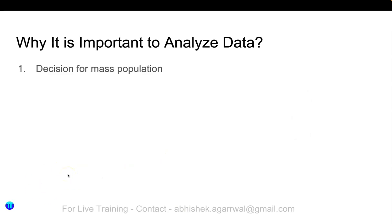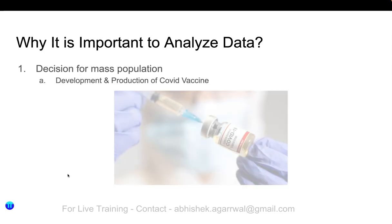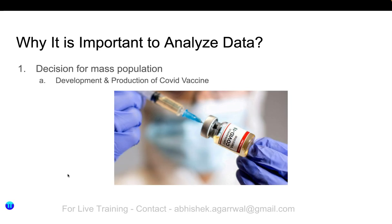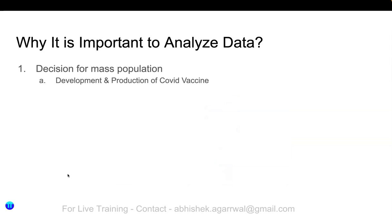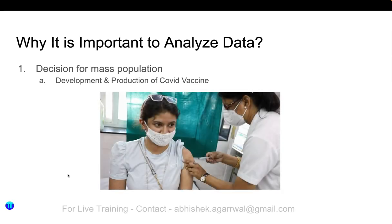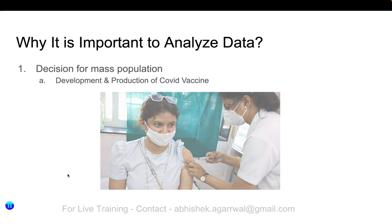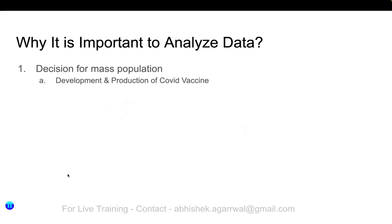Let's start with the first perspective: decisions for mass population — this is where the government comes in. The first scenario is the development and production of the COVID vaccine. We all recently came out from COVID, and as you know, across the world this was the first priority during 2020 and 2021 — what vaccine governments or private companies should create to give to everyone. This was a decision for billions of people.